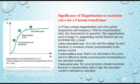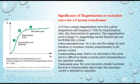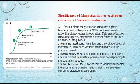The significance of the magnetization or excitation curve of a CT is that a CT has a unique magnetization curve for a given temperature and frequency and transformation ratio, which characterizes its operation. This magnetization curve — voltage versus magnetization current Im — can be divided into three zones: the non-saturated zone, the intermediary zone, and the saturated zone.